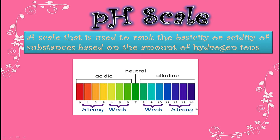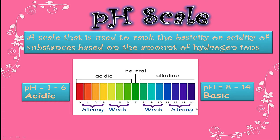pH values from 0 to 3 represent strong acids, and pH values from 11 to 14 represent strong bases or strong alkalines. So from this pH scale, we know that pH values from 1 to 6 represent acids, pH values from 8 to 14 represent bases, and pH value 7 represents neutral substances.